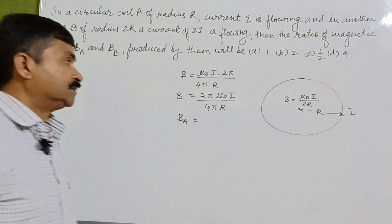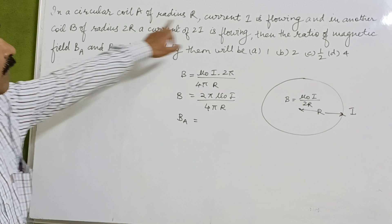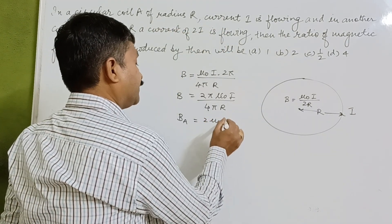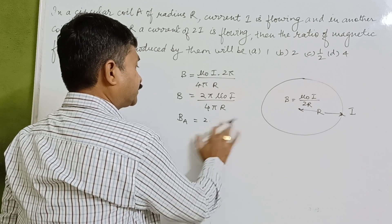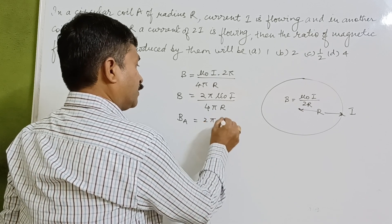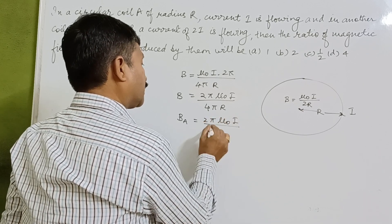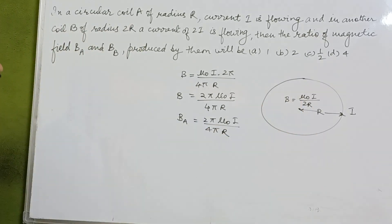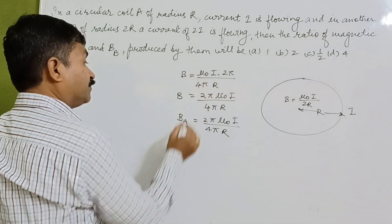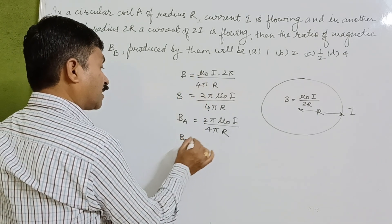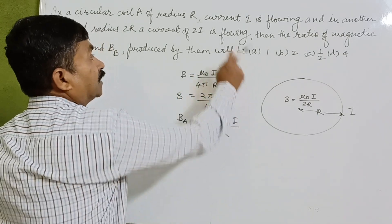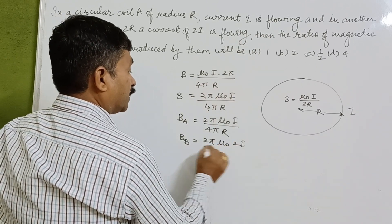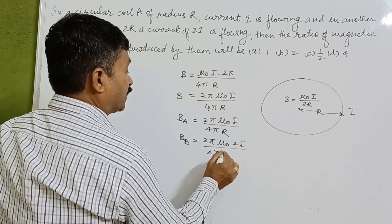For coil A, where the current is i and the radius is r, we get Ba = 2π μ₀i / 4πr. For coil B, where the current is 2i and the radius is 2r, we get Bb = 2π μ₀(2i) / 4π(2r).